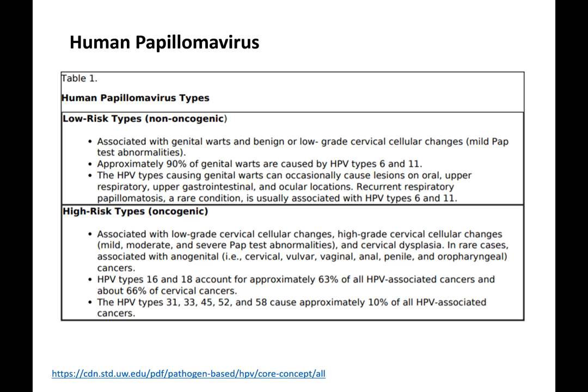Low-risk HPVs, mainly types 6 and 11, are associated with genital warts. High-risk types 16 and 18 account for about 63-66% of all cervical cancers. Additional high-risk types account for approximately another 10% — these numbers matter when considering vaccine coverage.